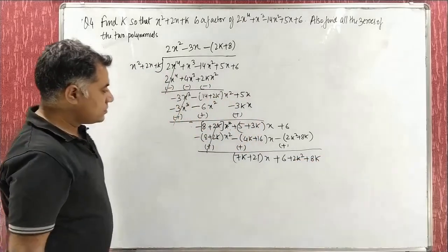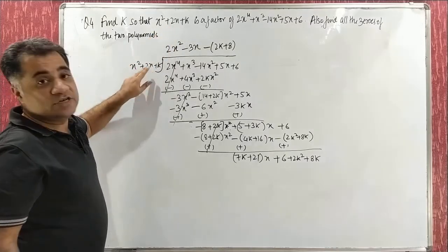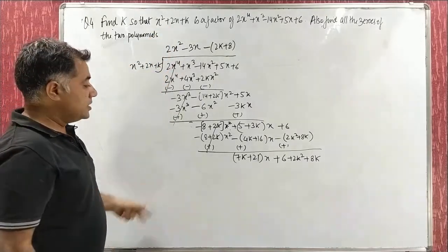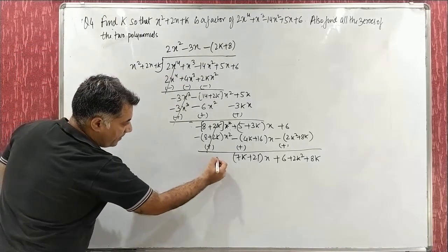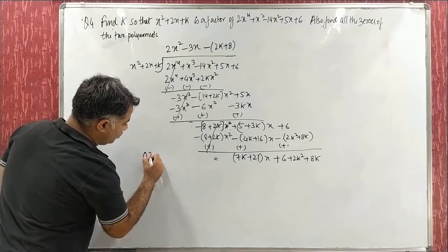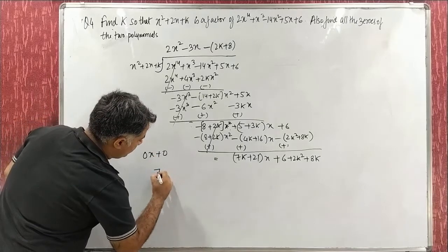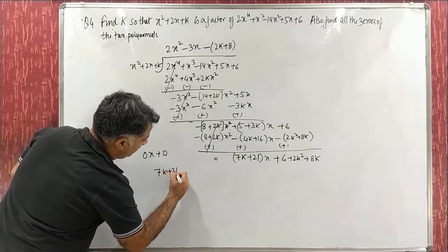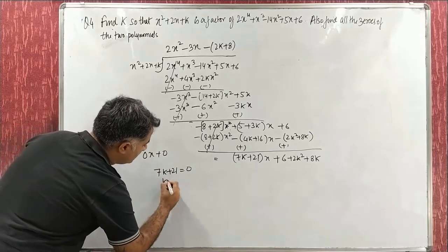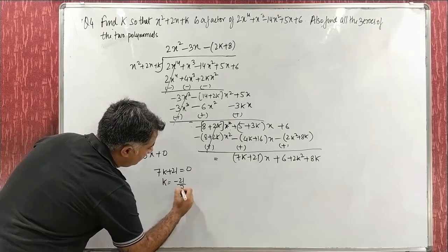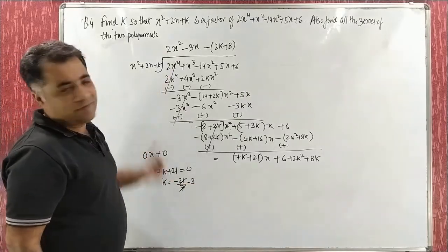Since g(x) is a factor of p(x), the remainder R(x) = 0. So 7k + 21 = 0, giving k = −21/7 = −3. The value of k is now found.